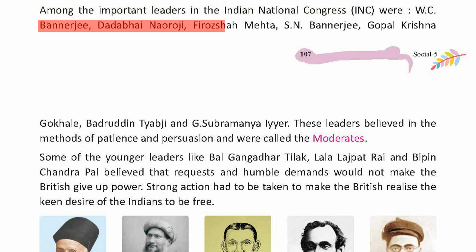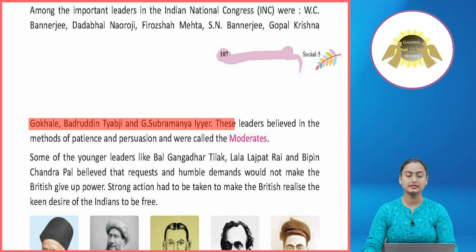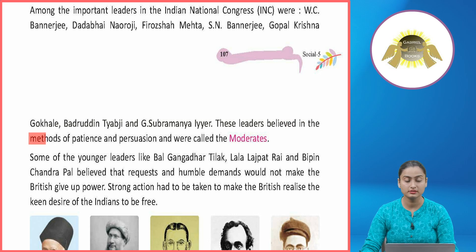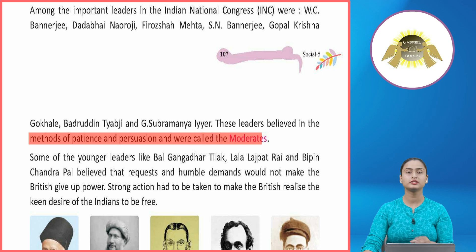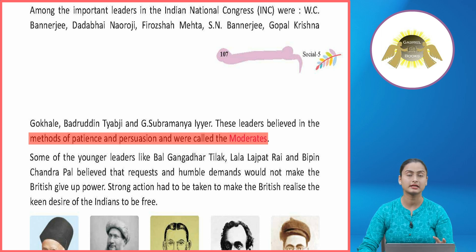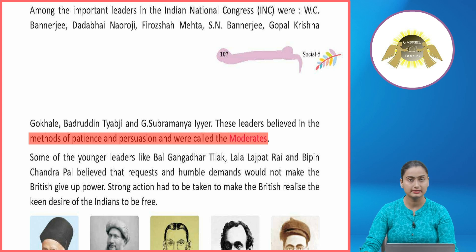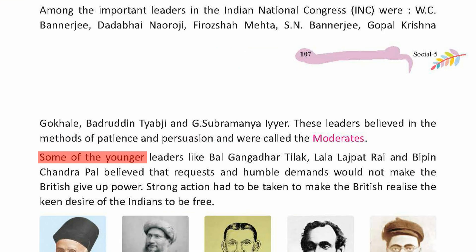Among the important leaders in the Indian National Congress were W.C. Banerji, Dadabhai Naoroji, Firoz Shah Mehta, S.N. Banerji, Gopal Krishna Gokhale, Badruddin Tyabji, and G. Subramania Iyer. These leaders believed in the methods of patience and persuasion and were called the Moderates. Yeh sare log maantay thay ki patience aur persuasion se, yaani sayyam rakhne se, aapko azaadi mil sakti hai.